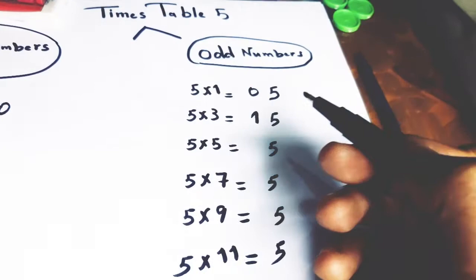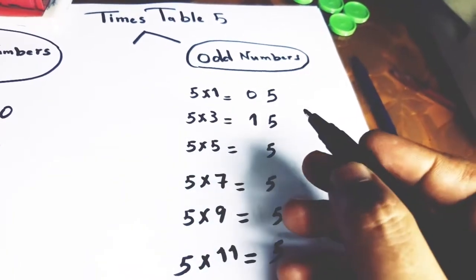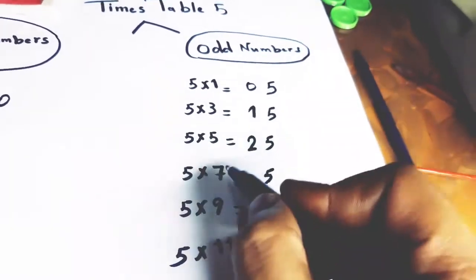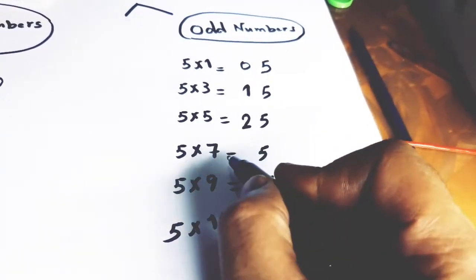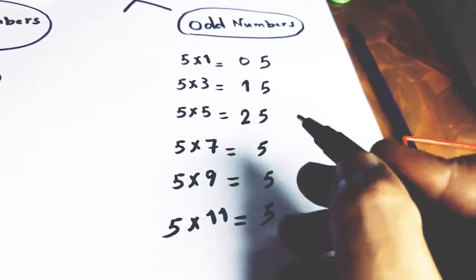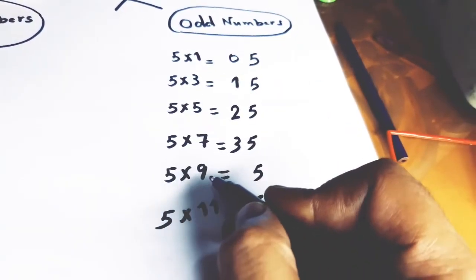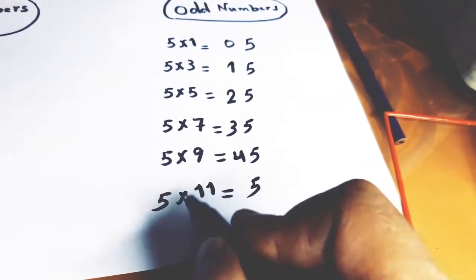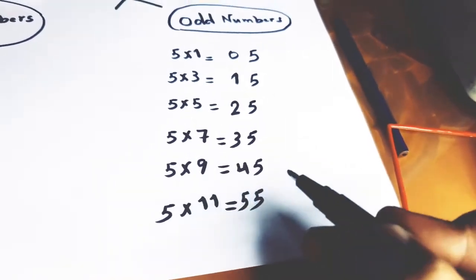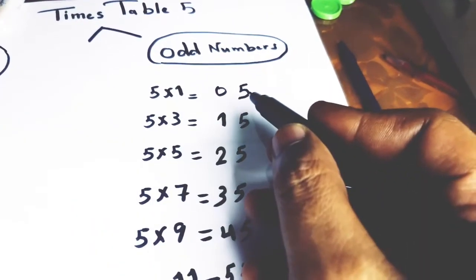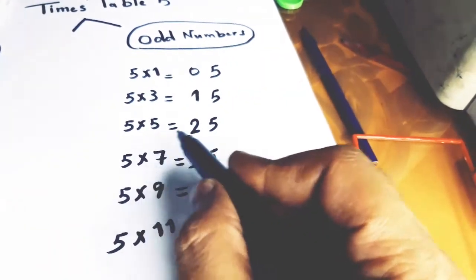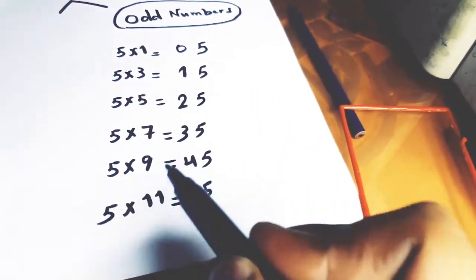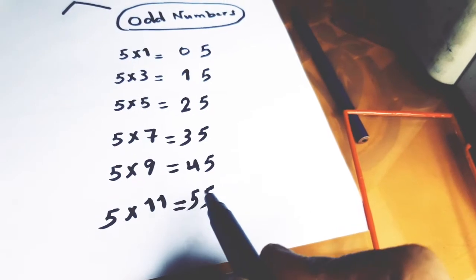Subtract 1 from 5: 5 − 1 = 4, divide 4 by 2 = 2. Subtract 1 from 7: gives 6, divide by 2 = 3. Subtract 1 from 9: gives 8, divide by 2 = 4. So: 5×1=5, 5×3=15, 5×5=25, 5×7=35, 5×9=45, 5×11=55.